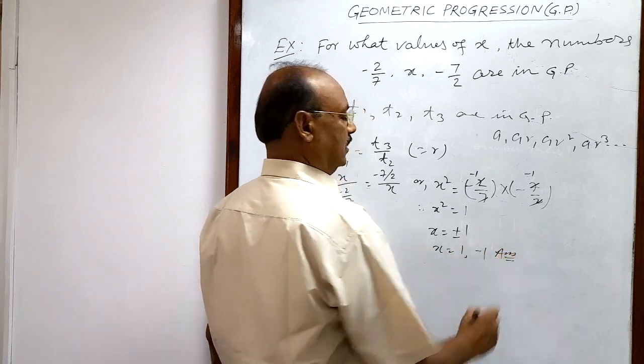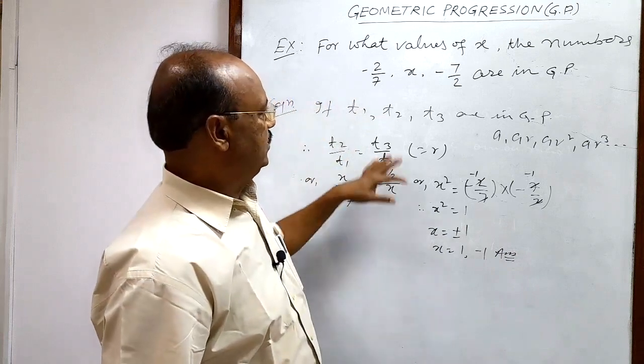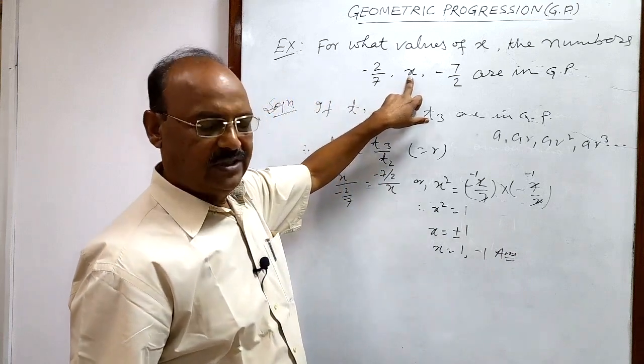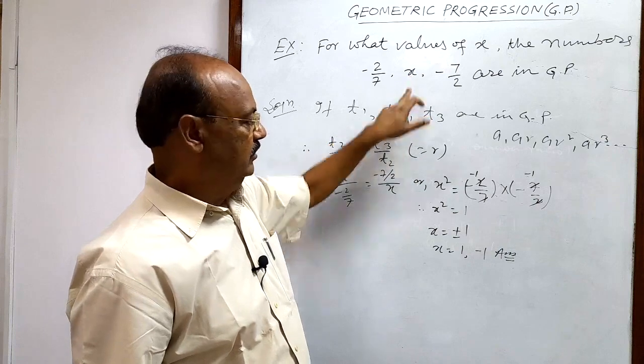These are the answers. So in this way we can calculate this unknown number which is second term of the GP very easily.